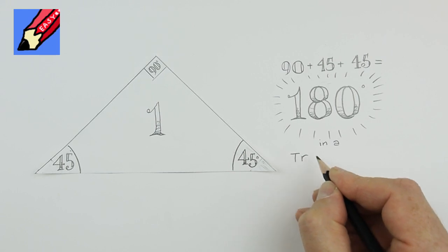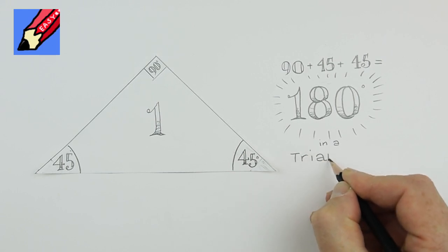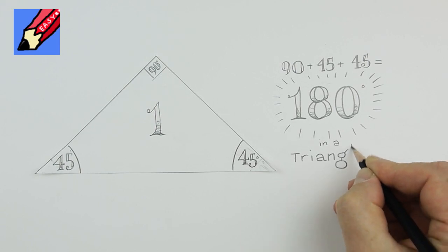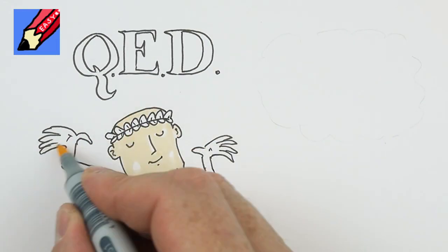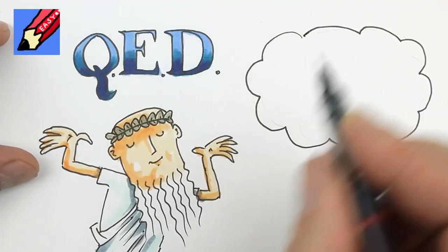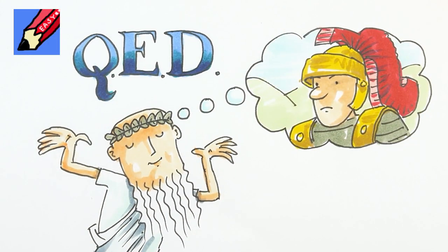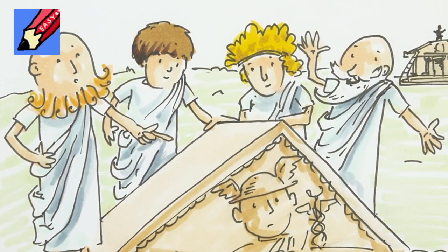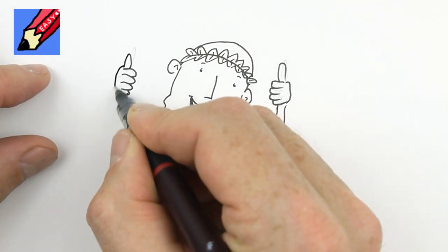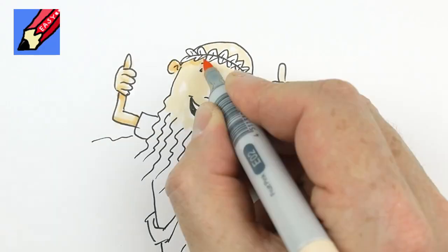There you are, said Euclid. The inside angles of a triangle always add up to 180 degrees. Quad erat demonstrandum, as the Romans would say. But we're ancient Greeks, said Euclid's friends. We certainly are, said Euclid, enigmatically.